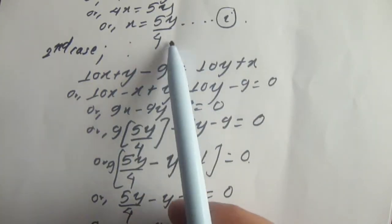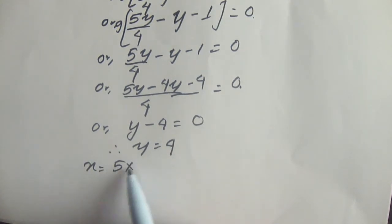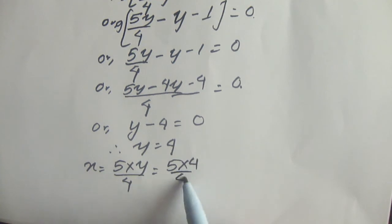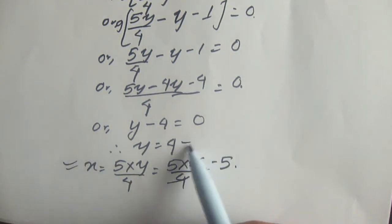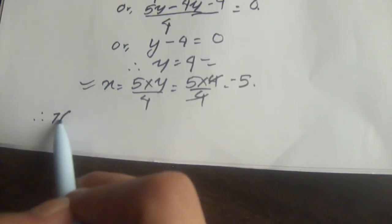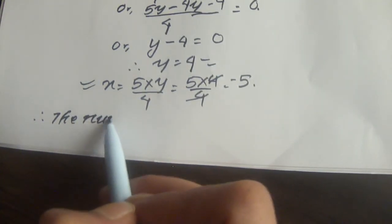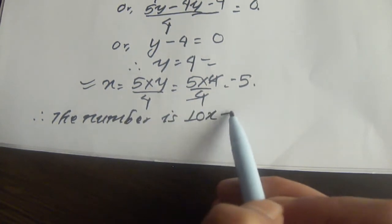Taking LCM of 4: 5y minus 4y minus 4 equals 0, which gives y minus 4 equals 0, therefore y equals 4. Then x equals 5y by 4, which is 5 times 4 by 4, so x equals 5.